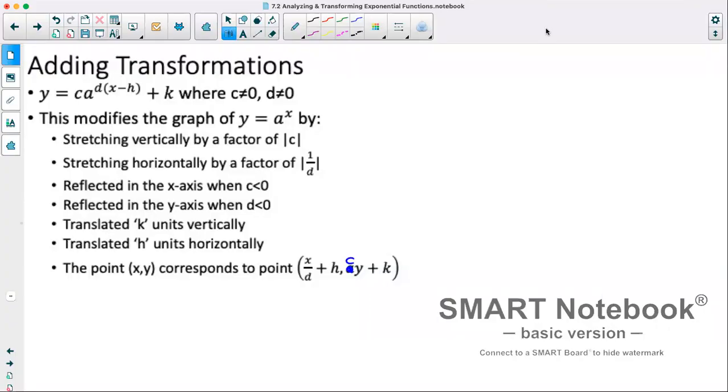We're now going to add transformations to our exponential graphs. So y equals c times a to the power of d times x minus h plus k, where we have restrictions. c cannot equal 0 and d cannot equal 0. It modifies our graph of our original exponential function by stretching our graph vertically by a factor of c, stretching it horizontally by a factor of 1 over d, reflecting it in the x-axis if our c value is negative, reflecting in the y-axis if our d value is negative, shifting our graph k units vertically and h units horizontally. Now if a point x, y on our original graph corresponds to a point x over d plus h comma c, y plus k on our new graph.